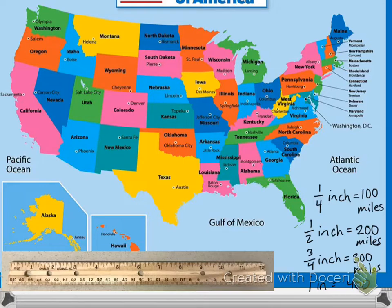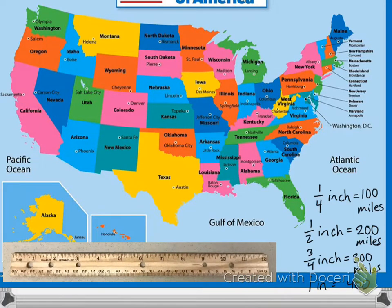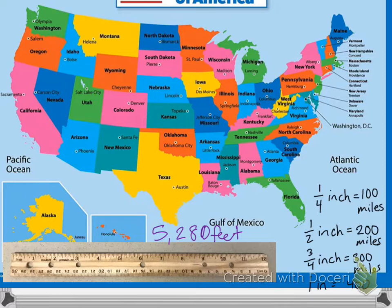One mile is about the distance from our school to the meters down the street. If we wanted to use our one-foot ruler to measure a mile, it would take us 5,280 feet, or 5,280 of these rulers, to measure one mile. A kilometer is a little bit more than half of a mile.